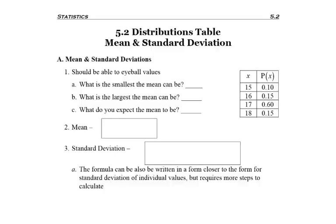In section 5.2, we're going to be finding the mean and standard deviation from distribution tables. Now when it comes to finding the mean or standard deviation, I always feel you can kind of eyeball what the answer is going to be.